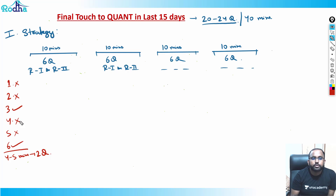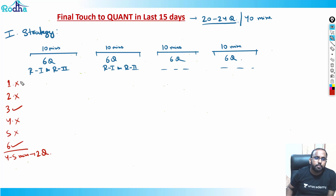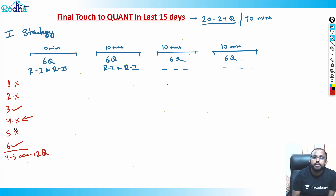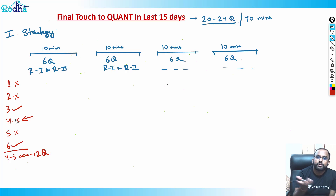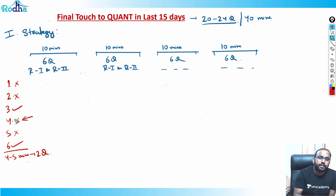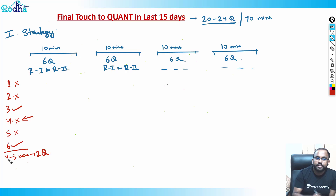Now you have another five minutes. Come back to stronger questions — maybe that fourth question was a profit and loss arithmetic problem you can handle. Come back to it and solve two more questions in the next five minutes. So in 10 minutes total, you've solved about four questions across two rounds.